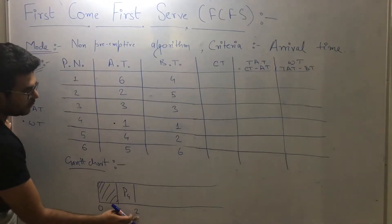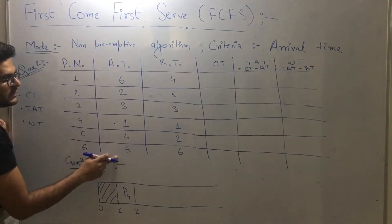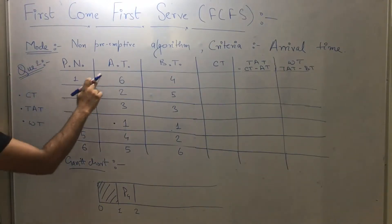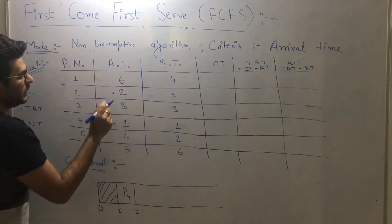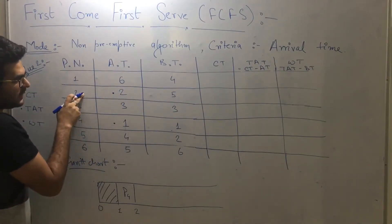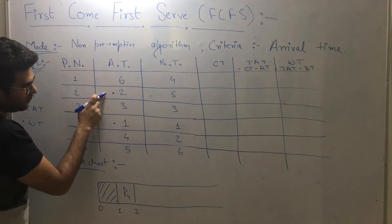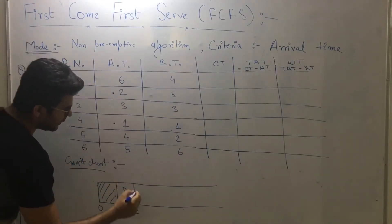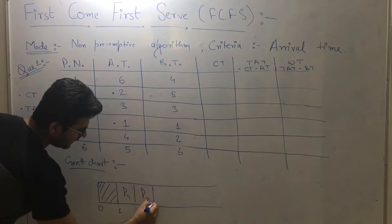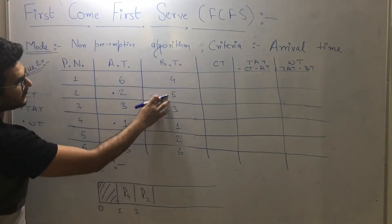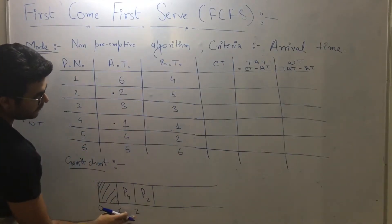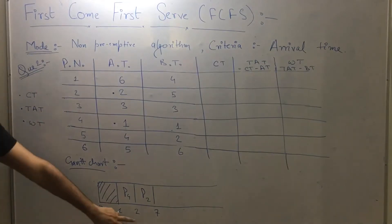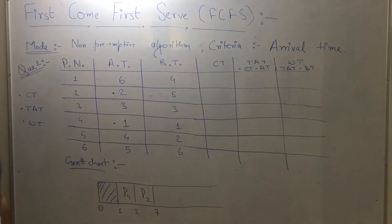Check that by time two, is there any other process that has arrived? Yes, there is one process with process ID two and arrival time of two units. As process four is completed, process two is in the system and we can schedule it. At time two, process number two arrives with burst time five units, so two plus five equals seven — process two will be executed till seven units of time.